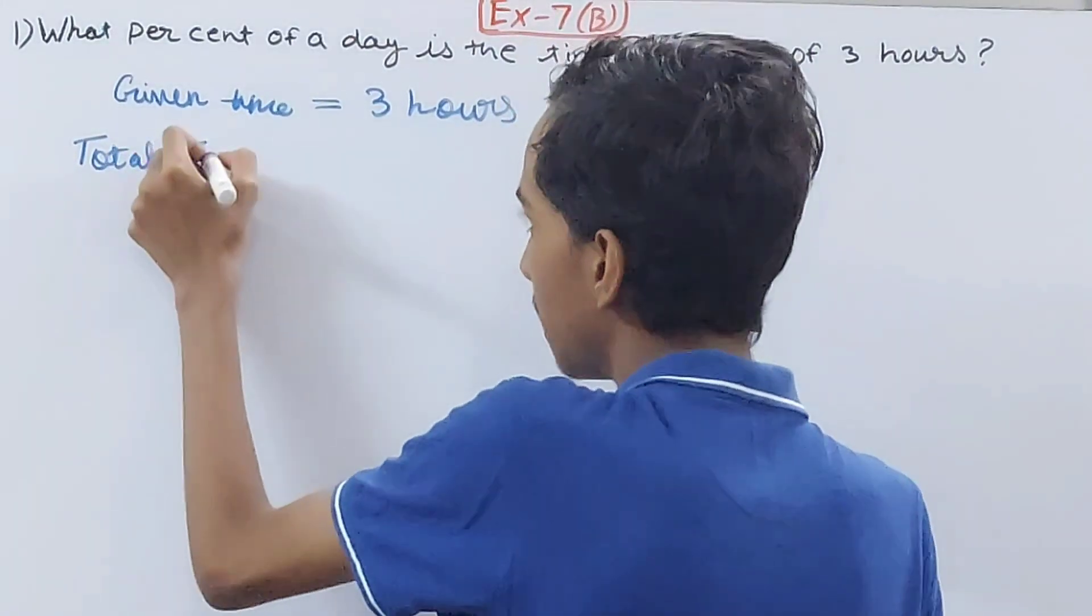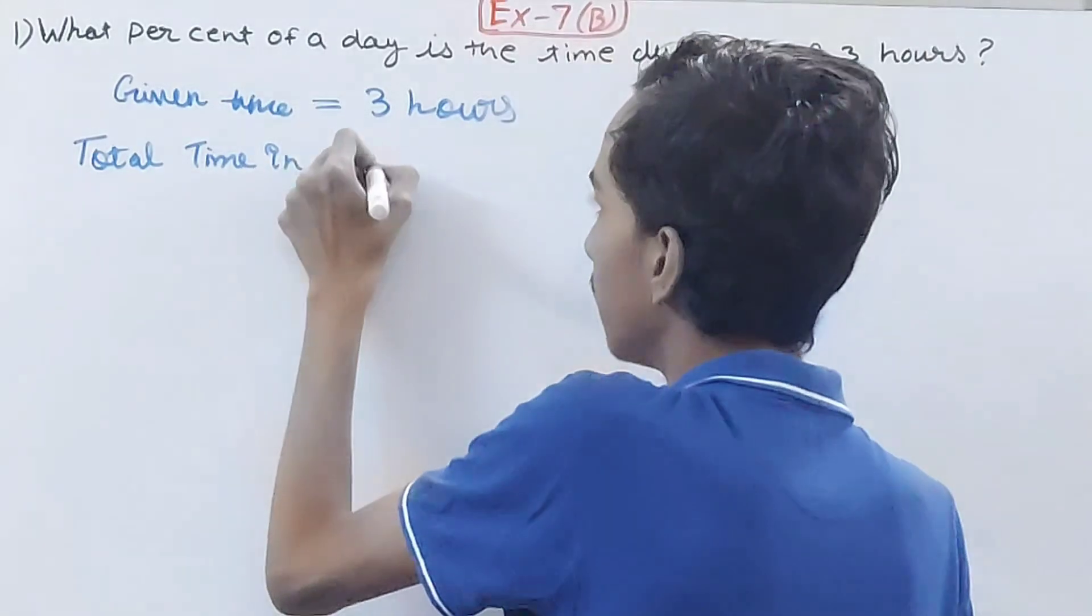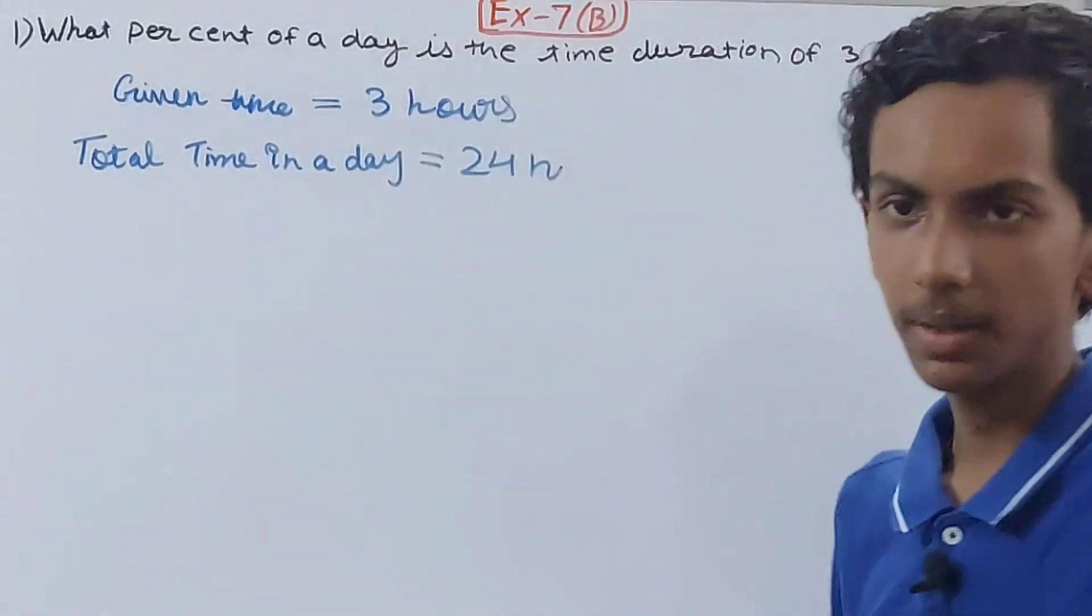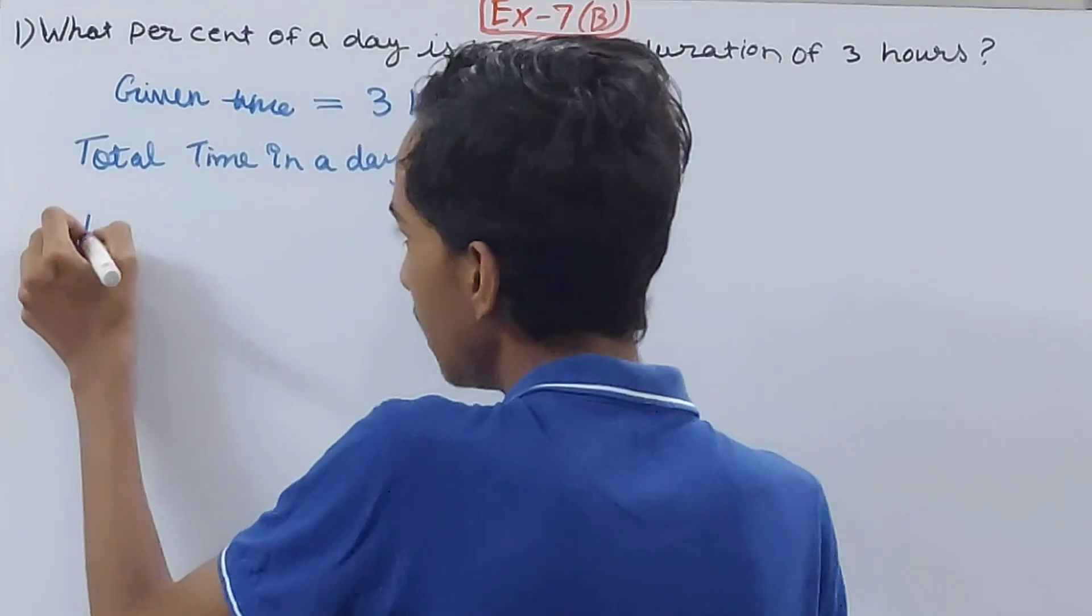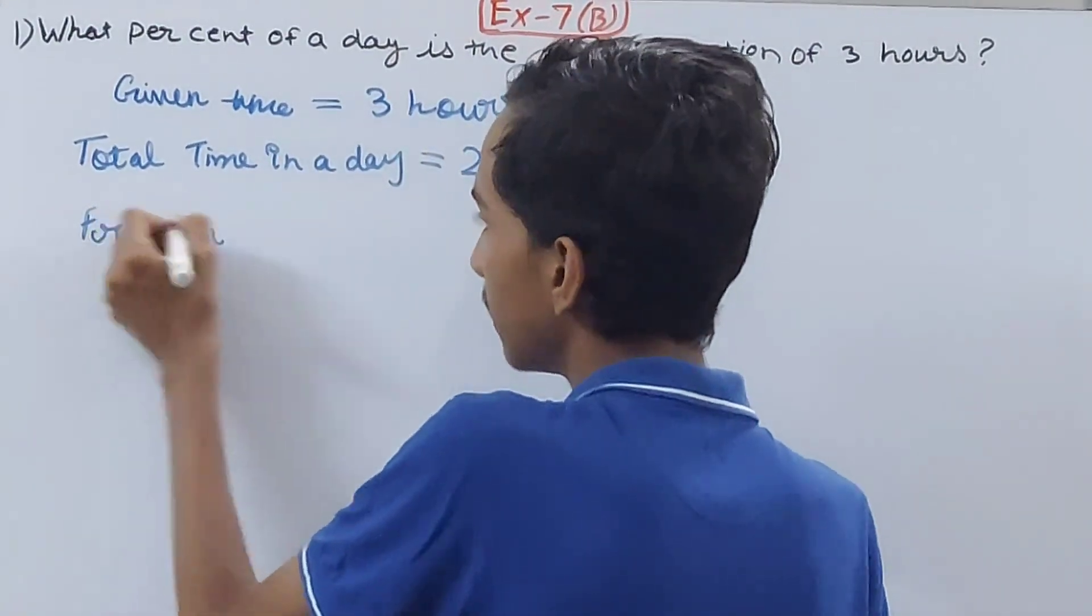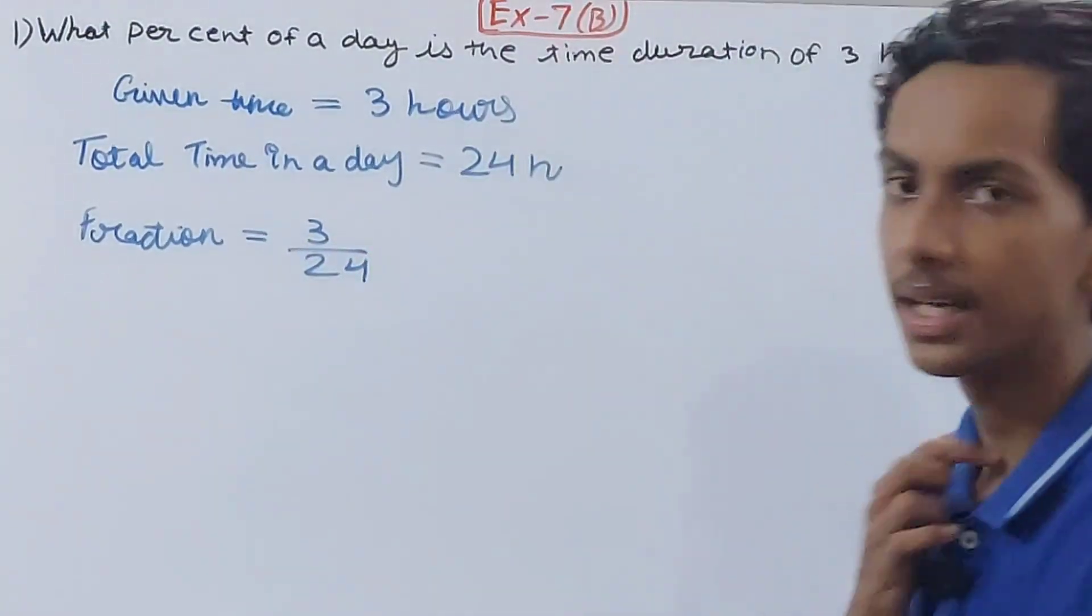Total time in a day, there are 24 hours in one day. Now 3 hours represents what fraction of the entire day? 3 out of 24, so 3 upon 24.